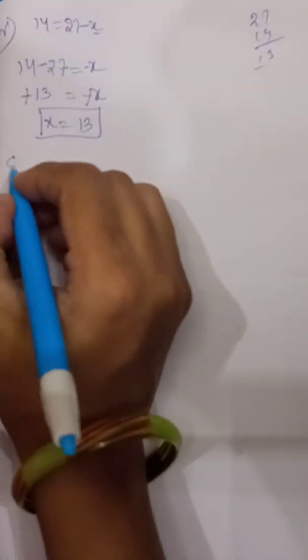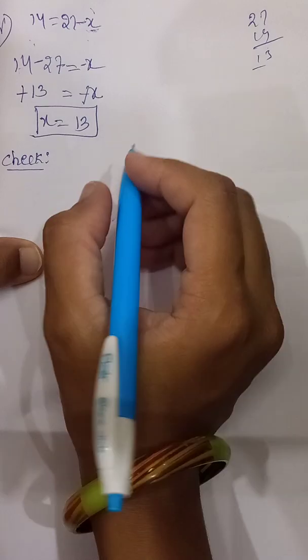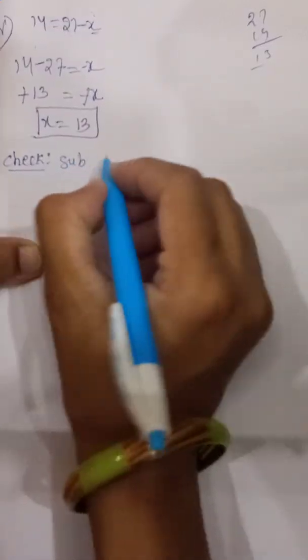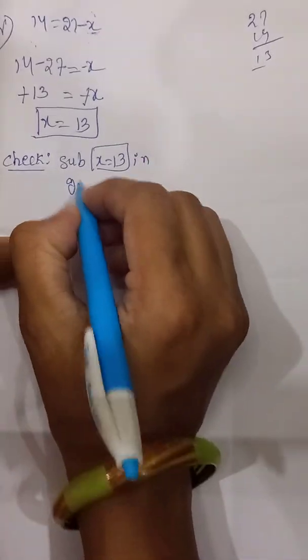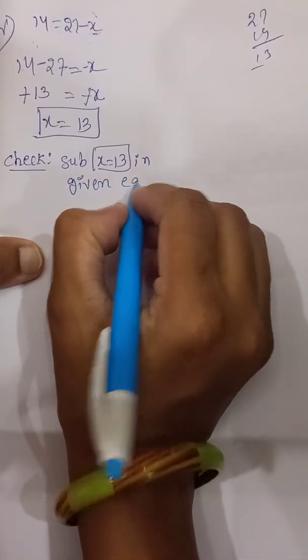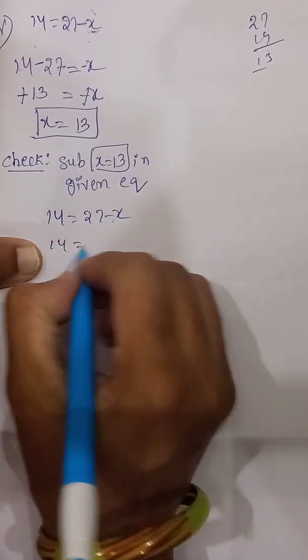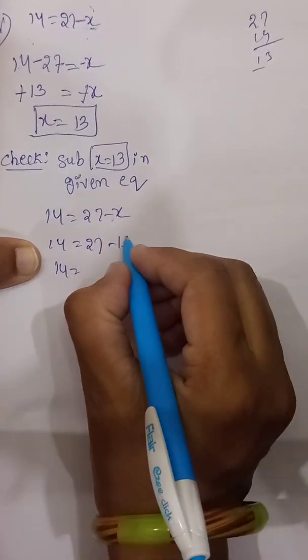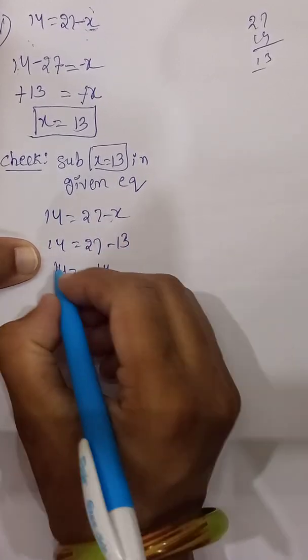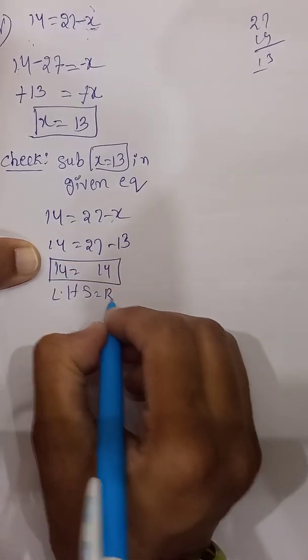Check: substitute X equal to 13 in the given equation 14 equal to 27 minus X. We get 14 equal to 27 minus 13, which is 14. LHS equals RHS, so our answer is correct.